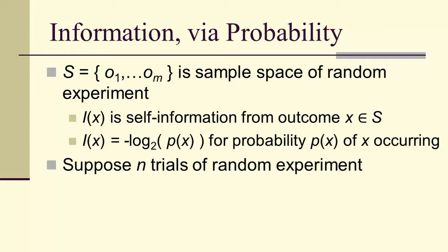If we have N trials of a random experiment, then outcome X occurs some count C_N(X) times in N trials.